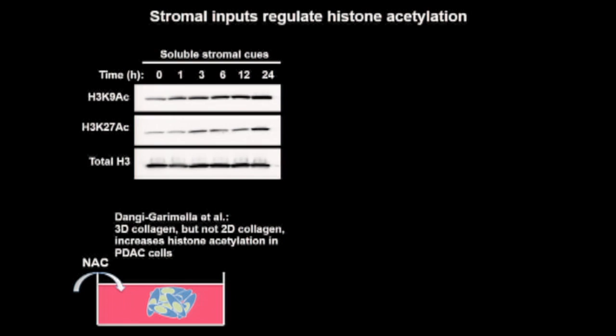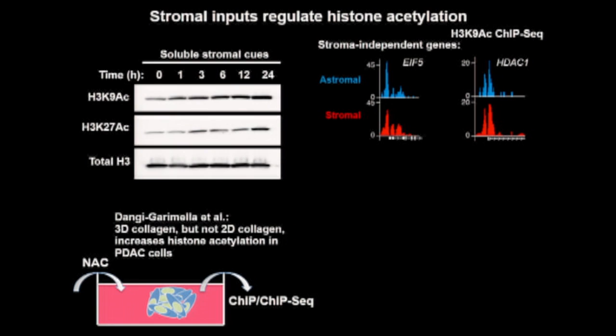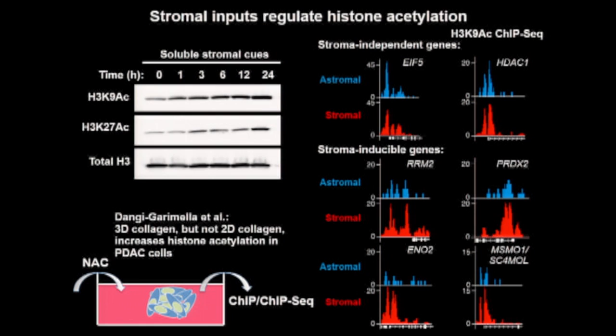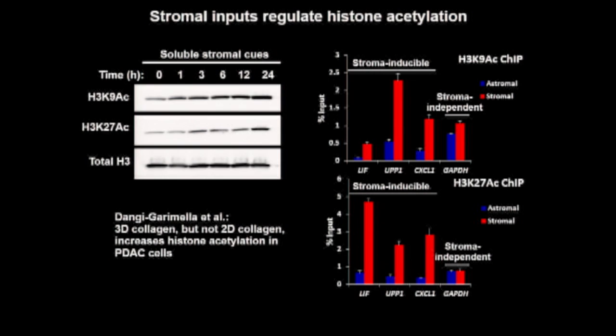From ChIP-seq experiments for H3K9 acetylation, I find that stroma-independent genes show high H3K9 acetylation at promoter regions under both astromal and stromal conditions. Looking at stroma-inducible genes, I see a significant increase in promoter acetylation at genes in diverse biological pathways consistent with my RNA-seq results. I also validated the ChIP-seq data by site-specific ChIP using both H3K9 and H3K27 acetylation, seeing significantly increased acetylation at promoter or enhancer regions upstream of inducible genes like LIF, UPP1, and CXCL1.